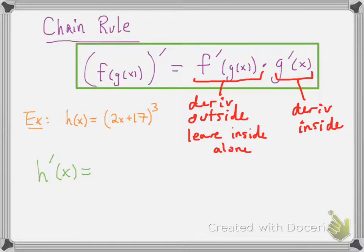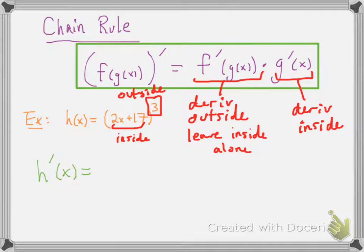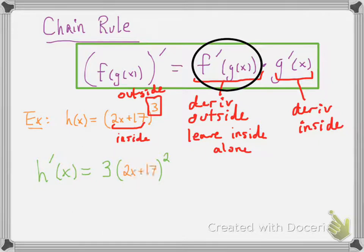Let's take a look at an example: the function 2x plus 17, cubed. The inside function here was 2x plus 17, and the outside function was the cubed portion. The way you take the derivative is you start with the derivative of the outside — the cubed part. So you bring the 3 down in front and then the exponent becomes a 2. That's the derivative of the outside. But you have to leave the inside alone, so you just rewrite 2x plus 17.